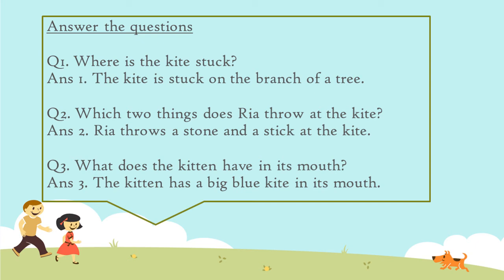Let's read the question and answers once again. Where is the kite stuck? The kite is stuck on the branch of a tree. Which two things does Riya throw at the kite? Riya throws a stone and a stick at the kite. What does the kitten have in its mouth? The kitten has a big blue kite in its mouth.